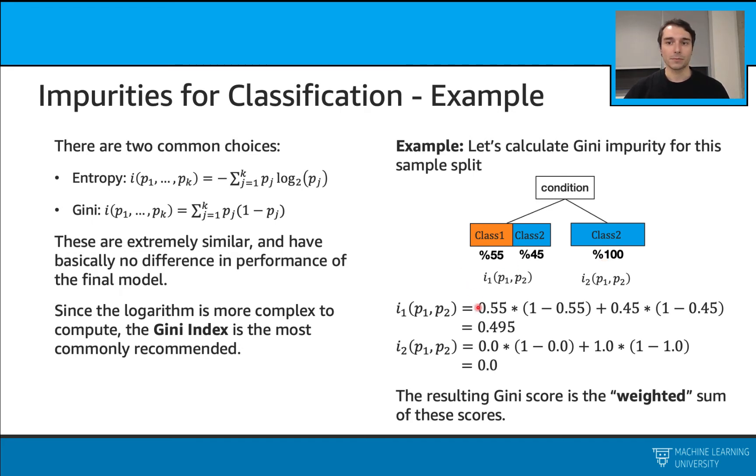For the yes subset, I will just plug in my numbers. My probability of having this class 1 data points is 0.55 because that's the distribution there, times 1 minus that, plus the probability of having the second class is 0.45 times 1 minus that. Overall, this gives me 0.495.